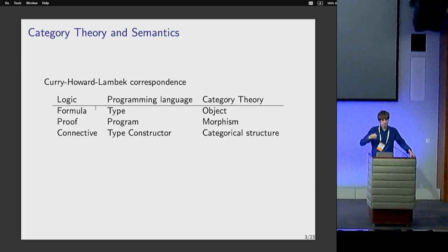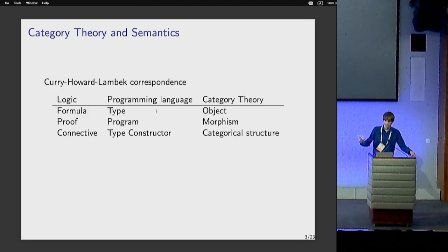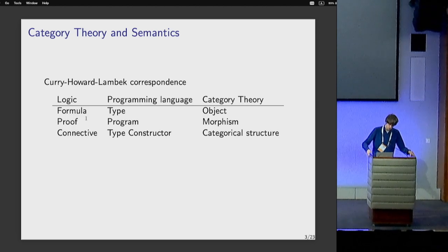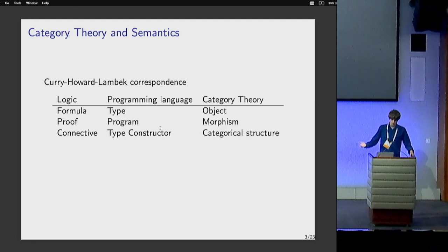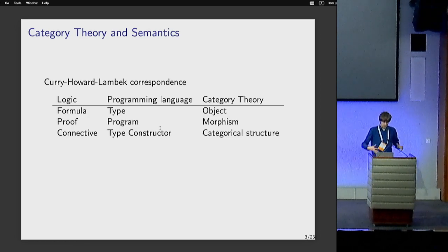In a programming language, instead of formulas you write types, instead of proofs you write programs, and you use type constructors to build complicated types. In category theory, instead of formulas or types, you write down objects; instead of proofs or programs, you write down morphisms. Analogously, connectives or type constructors correspond to categorical constructions like limits and exponentials. This is why category theory is a good framework for studying semantics of logics or programming languages.